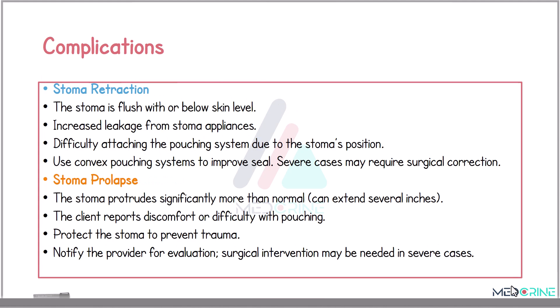Another complication is stoma retraction, where the stoma is flush with or below the skin level. This causes increased leakage from the stoma appliance and difficulty attaching the pouching system due to the stoma's position. Management includes using a convex pouching system to improve the seal, and severe cases may require surgical correction.